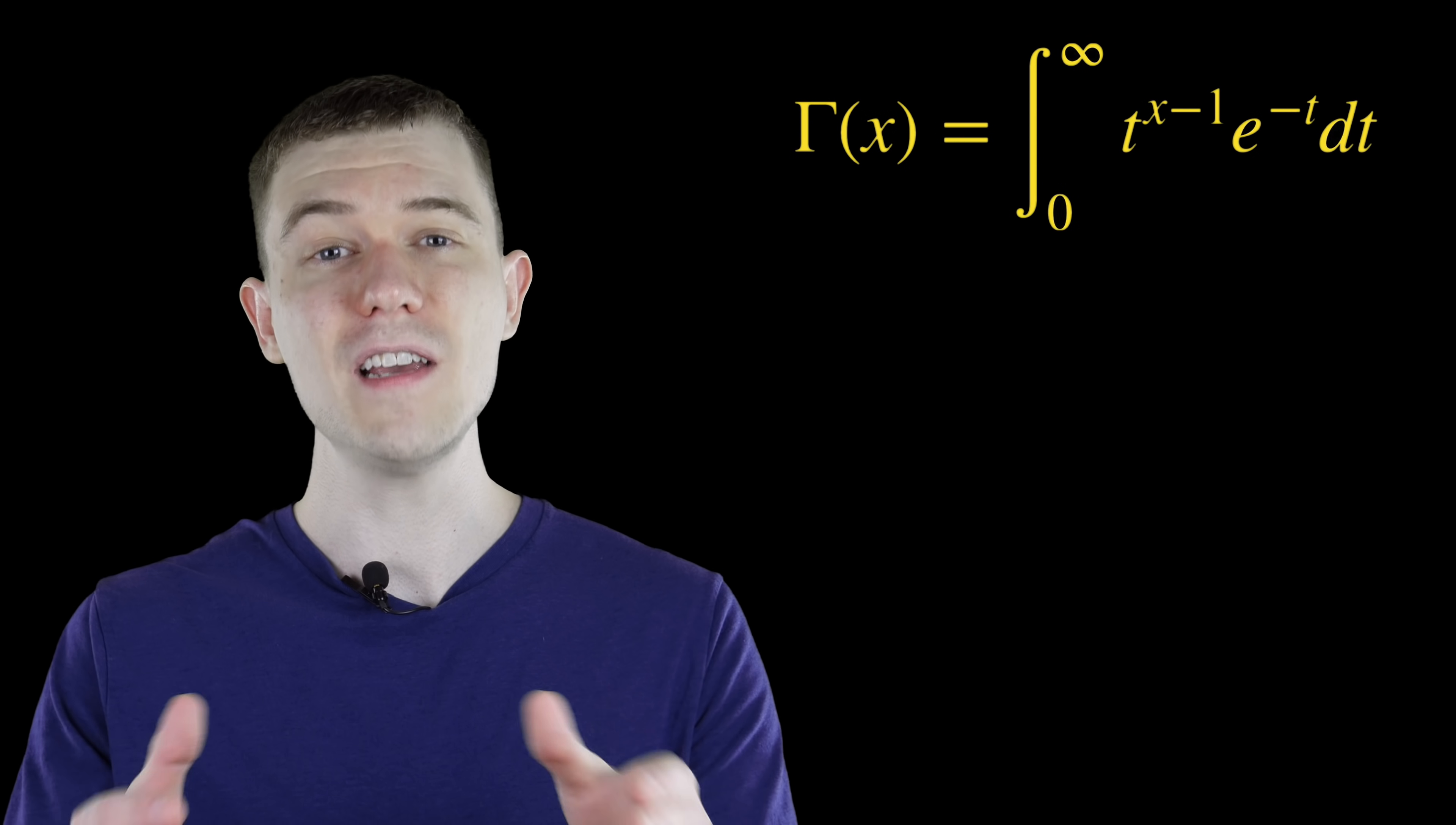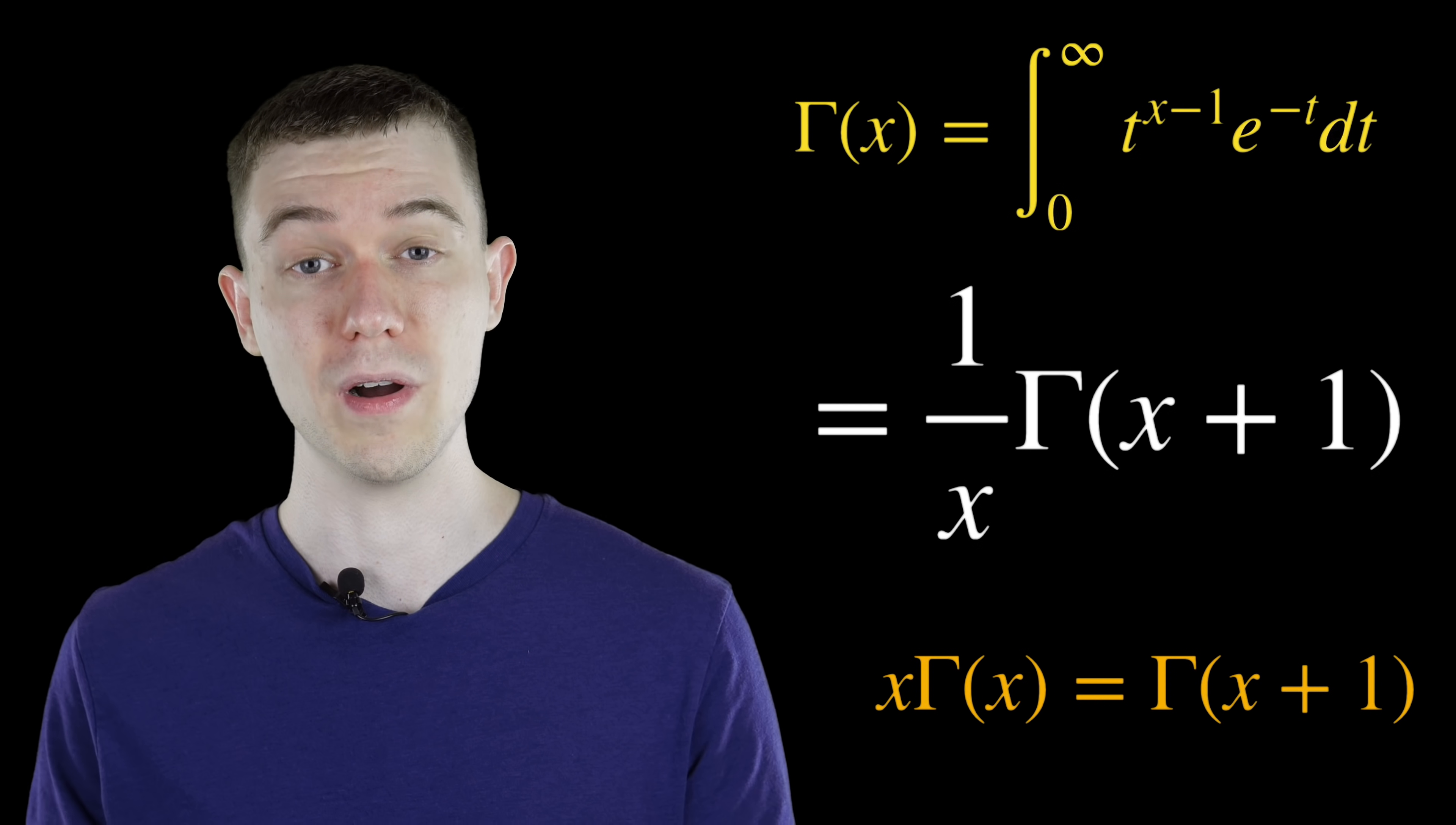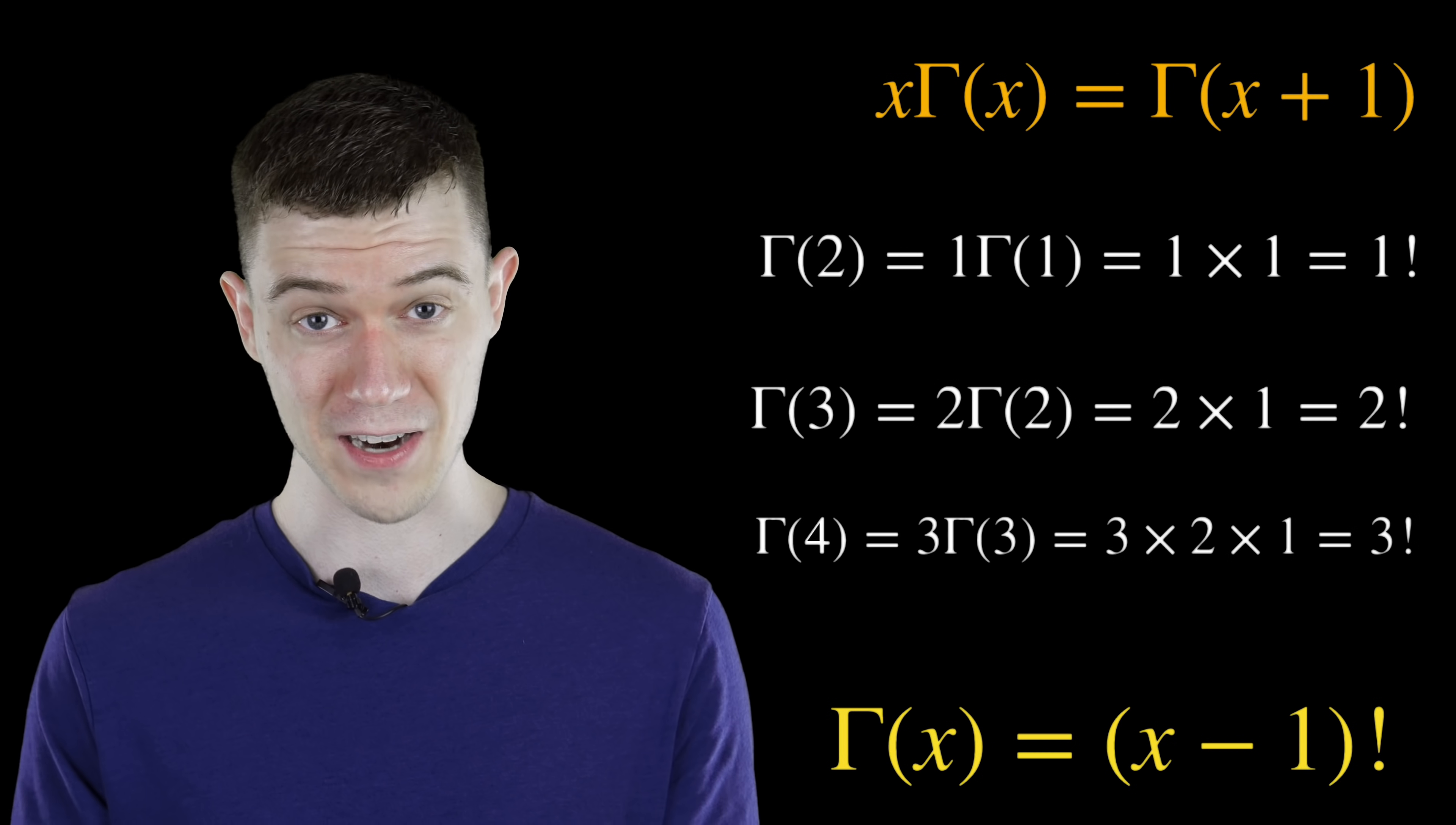And actually what we have left here is the gamma function at x plus 1. So gamma of x equals 1 over x, gamma of x plus 1. Or another way of saying that is that x gamma of x equals gamma of x plus 1, which is exactly what you want for the factorial function. And so this basically gives us exactly what we want, and we have a nice continuous factorial function.